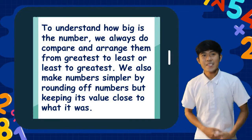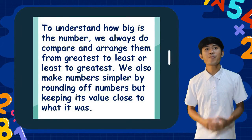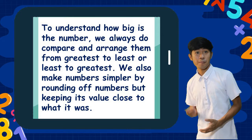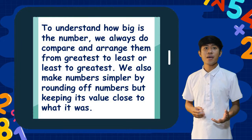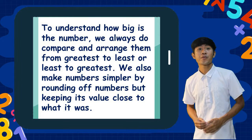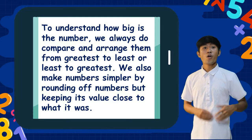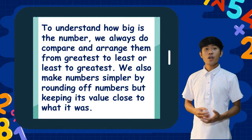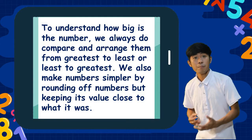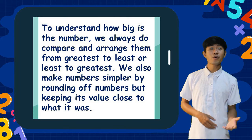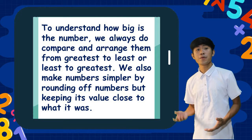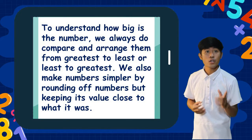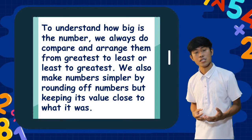To understand how big a number is, we always compare and arrange them from greatest to least or least to greatest. We also make numbers simpler by rounding off numbers, while keeping the value close to what it was.